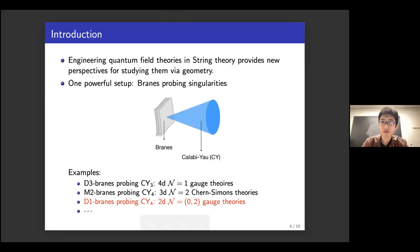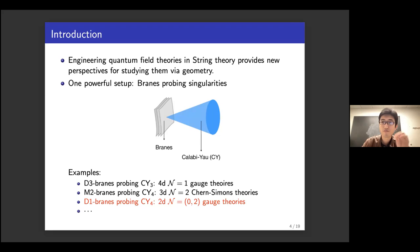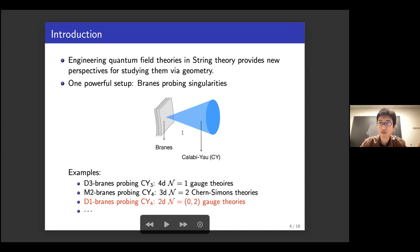Engineering QFT in string theory usually provides new perspectives while combining geometric techniques. One celebrated setup is branes probing singularities — you can think of branes probing a singularity which is part of a Calabi-Yau geometry, or some special holonomy geometry like G2 or Spin-7. For example, D3 branes probing a Calabi-Yau threefold gives an infinite class of 4D N=1 gauge theories, M2 branes probing a Calabi-Yau fourfold generalizes the ABJM theory, and the starting point of today's talk is D1 branes probing a Calabi-Yau fourfold, giving 2D (0,2) theories on the worldvolume.